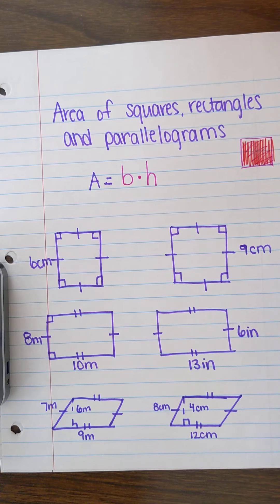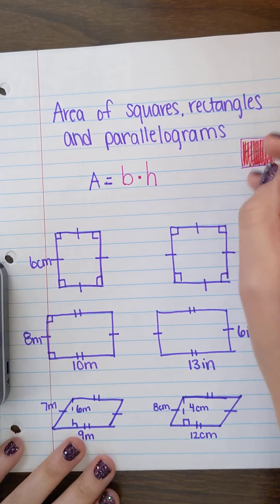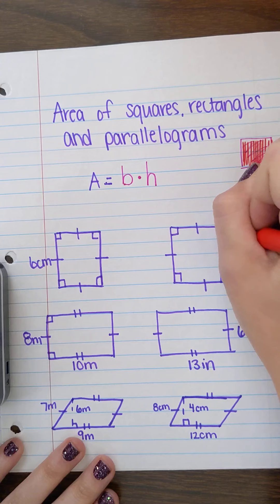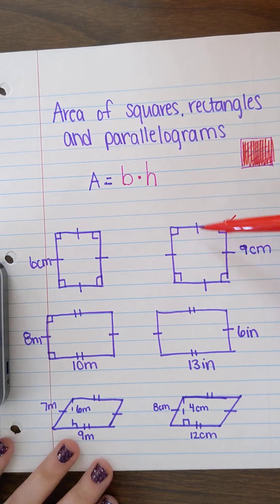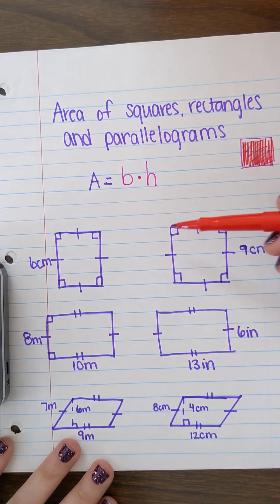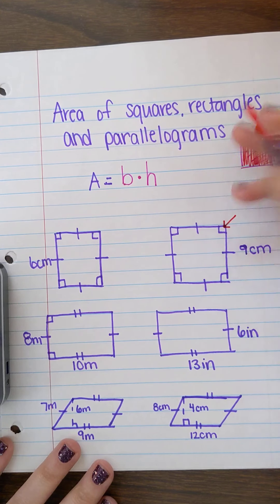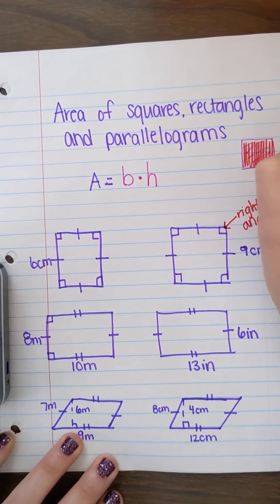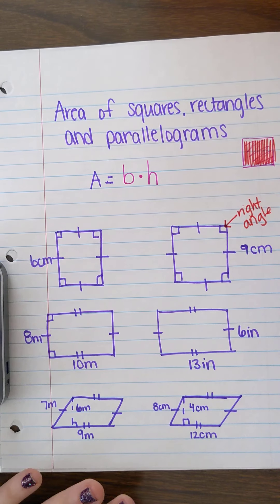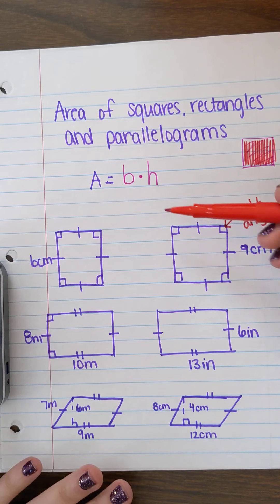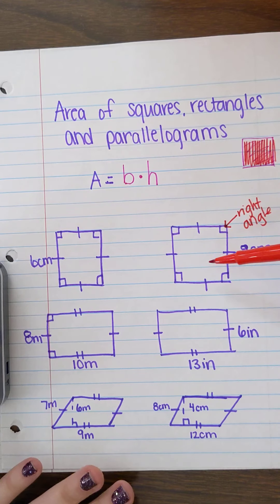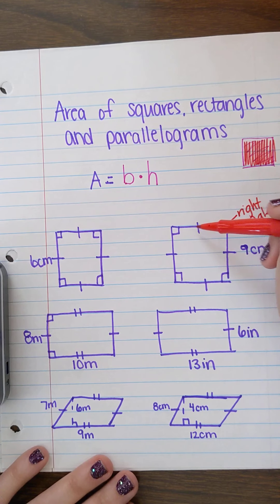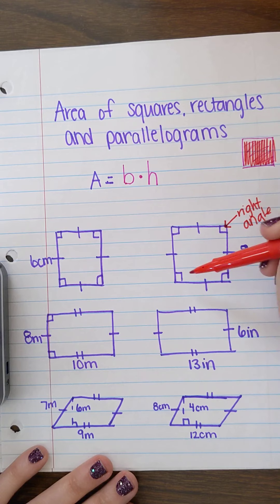Today we are going to focus on identifying the height by looking for a right angle. We'll use this picture down here of this square. We know that a square has all sides that are the same and four right angles. In math, we use this little box to represent a right angle, and a right angle makes a perfect 90-degree angle.